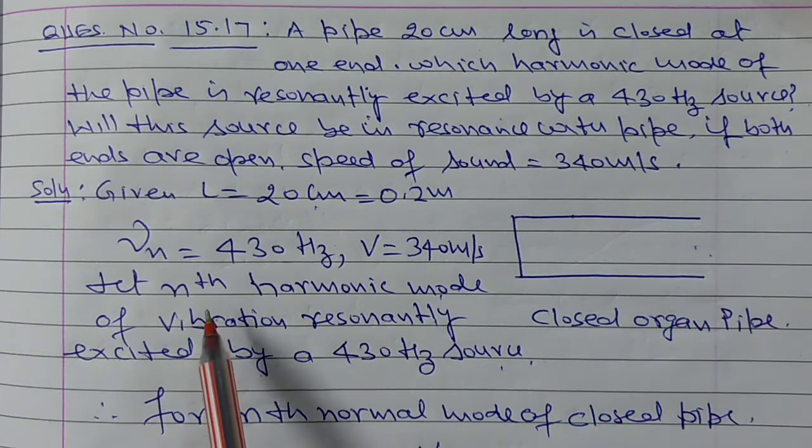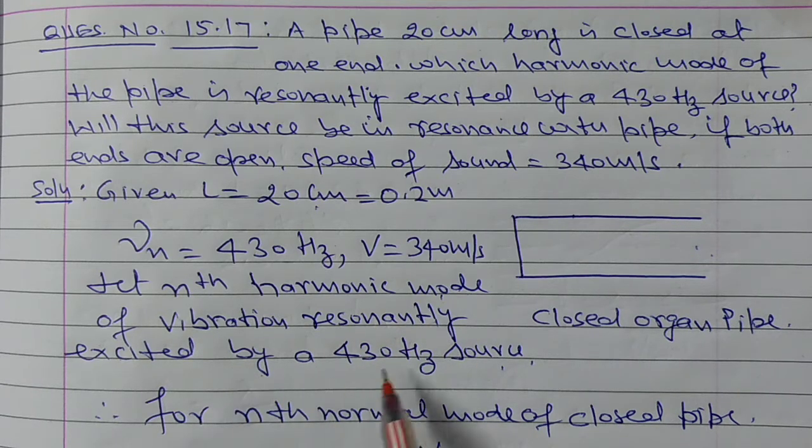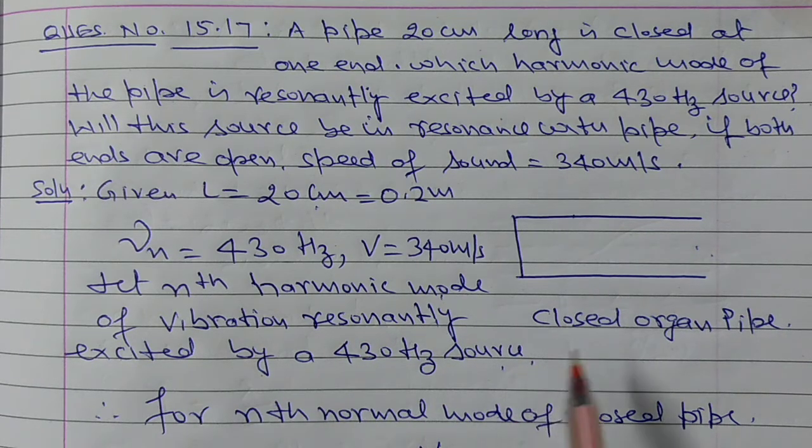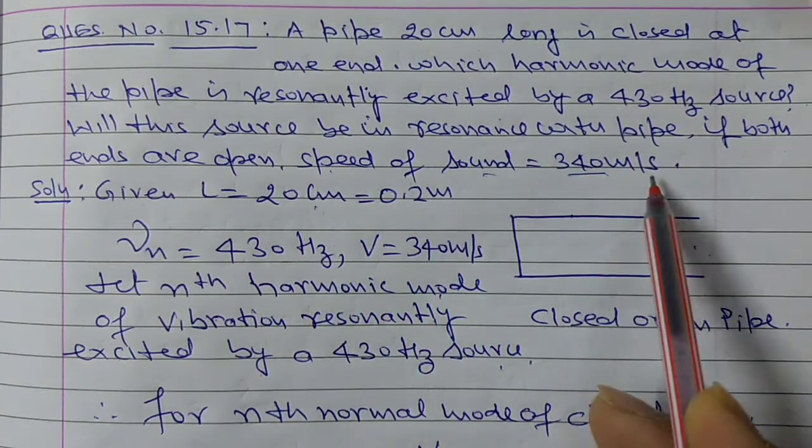We suppose that nth harmonic mode of vibration is resonantly excited by a 430 Hz source. And it is also given that the speed of sound is 340 m per second.